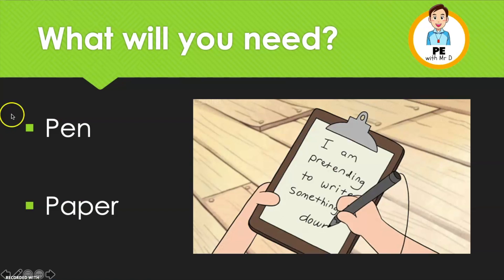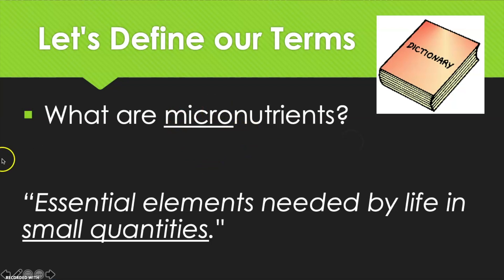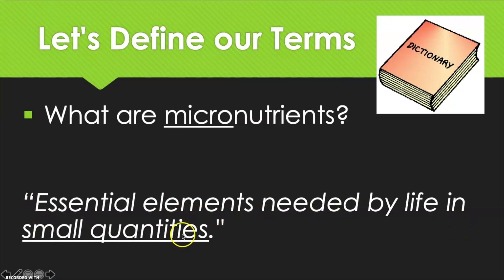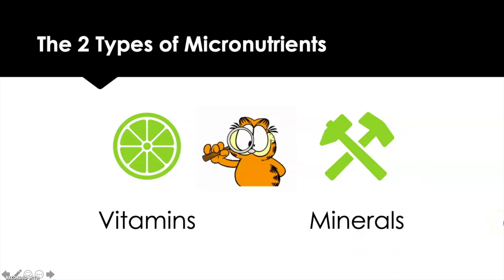All you'll need is a pen and paper. So first let's define our terms. What are micronutrients? Micro means small — the opposite of macro. I did another video on macronutrients you might like to check out for context. Micronutrients are essential elements needed by the human body in small quantities. There are two types: vitamins and minerals.